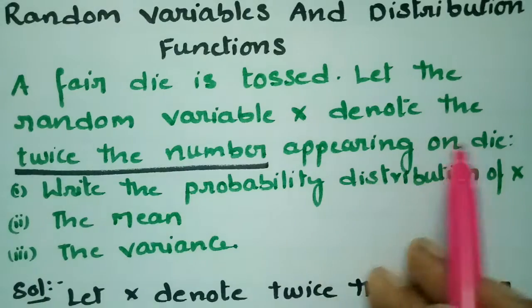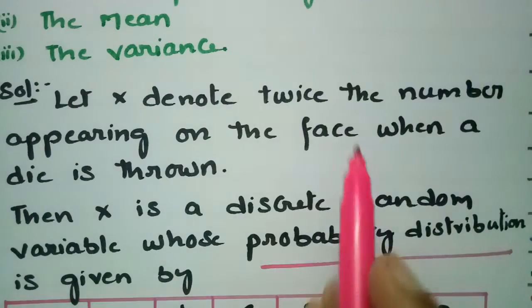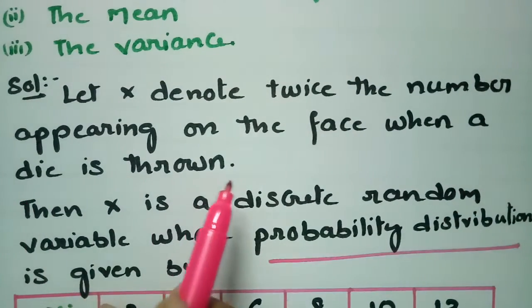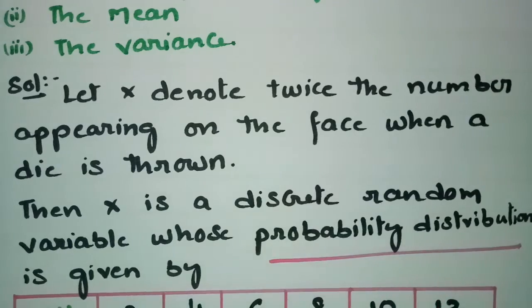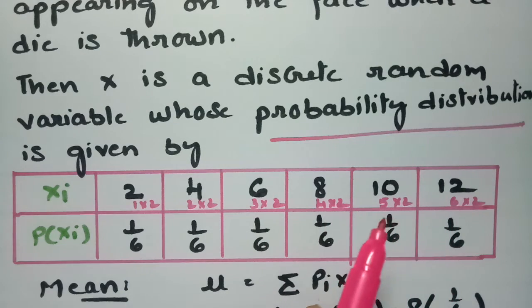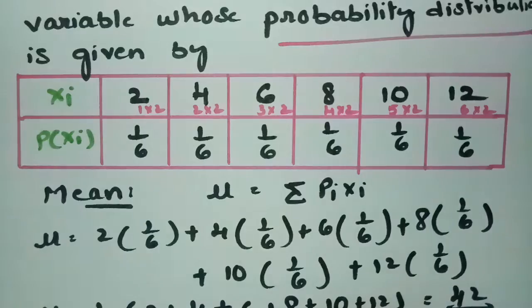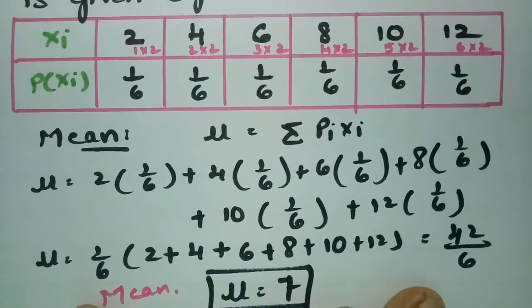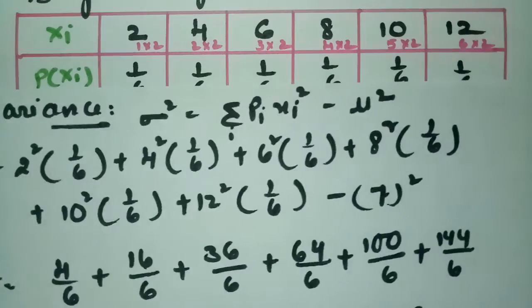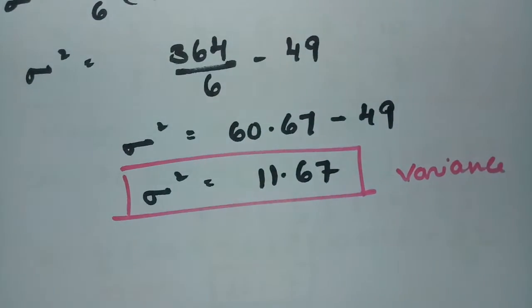To summarize: X denotes twice the number appearing on the face when a die is thrown. X is a discrete random variable taking values 2, 4, 6, 8, 10, and 12, each with probability 1/6. The mean μ = Σ pi·xi = 7, and the variance σ² = Σ pi·xi² − μ² = 11.67. Thank you so much for watching — have a look at my next video as well.